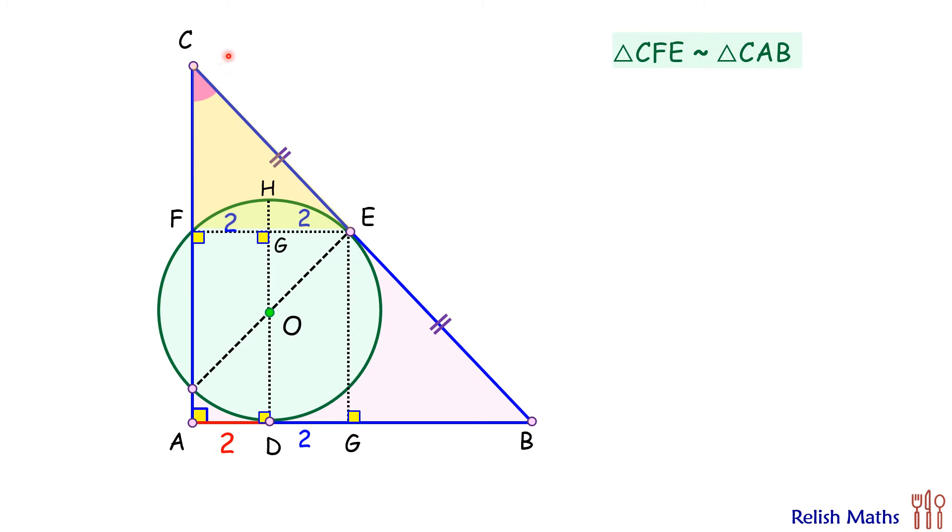Now here if we say CE is x cm, E is the midpoint so length CB will be 2x. So the ratio is 1 is to 2.